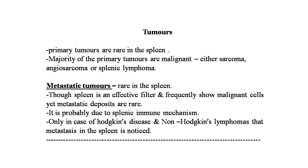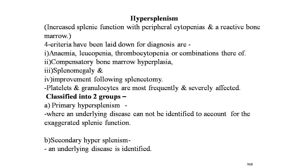Only in cases of Hodgkin's disease and non-Hodgkin's lymphoma is metastasis in the spleen noticed. Hypersplenism is characterized by increased splenic function with peripheral cytopenia and a reactive bone marrow. Four criteria for diagnosis are: anemia, leukopenia, thrombocytopenia and combinations thereof; compensatory bone marrow hyperplasia; splenomegaly; and improvement following splenectomy. Platelets and granulocytes are most frequently and severely affected.